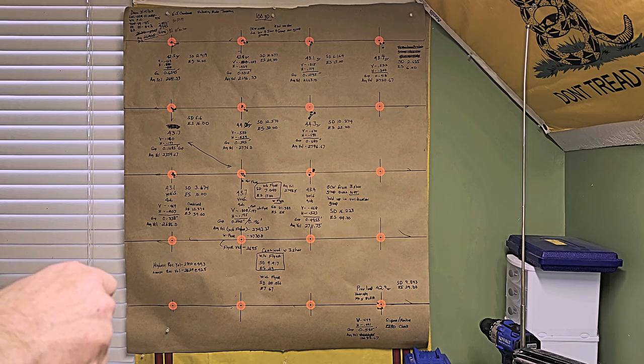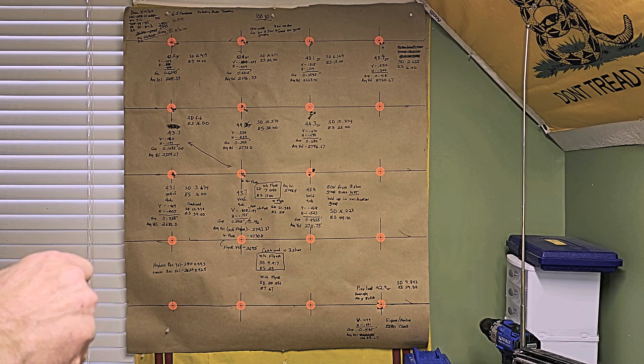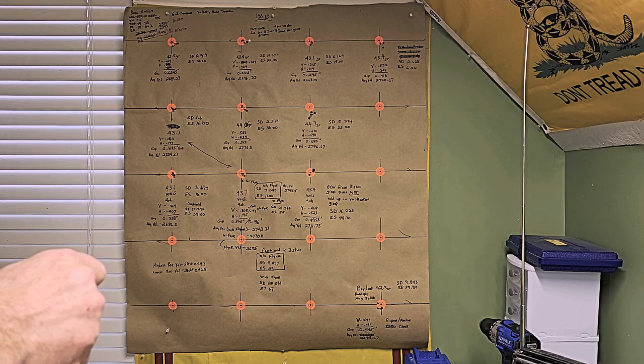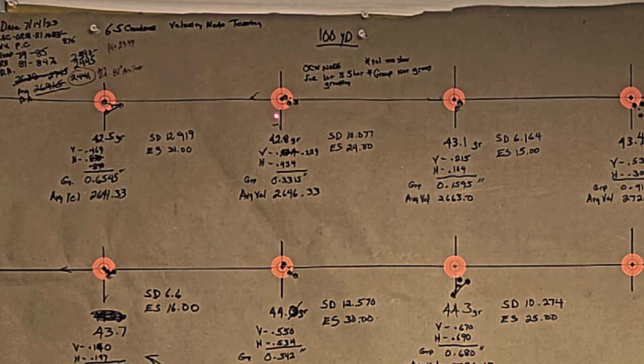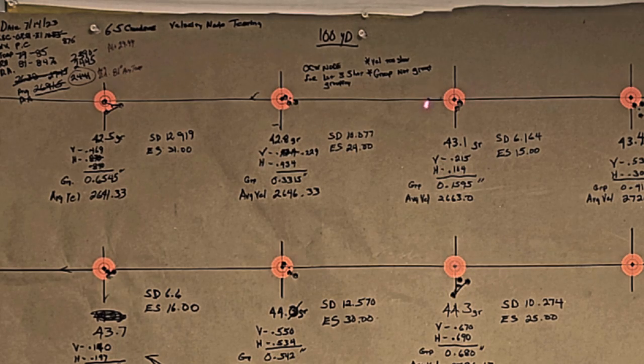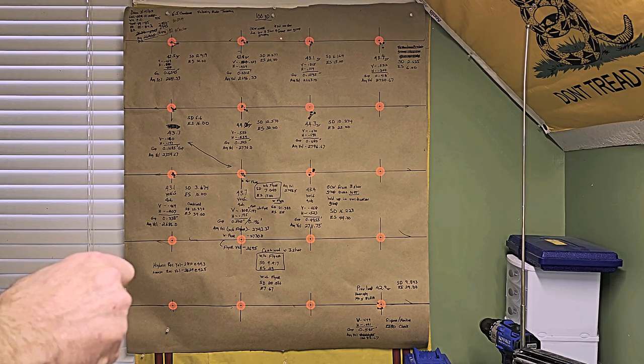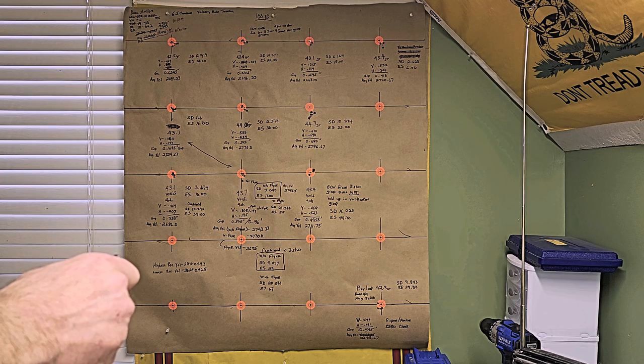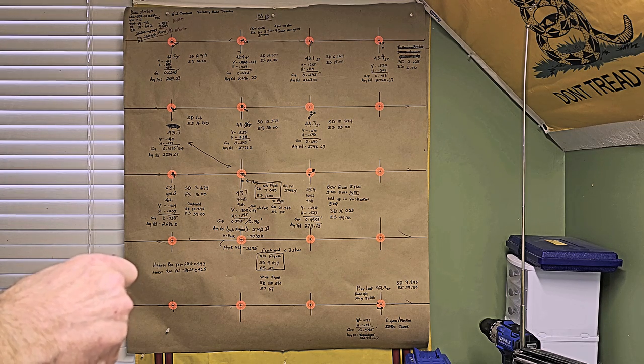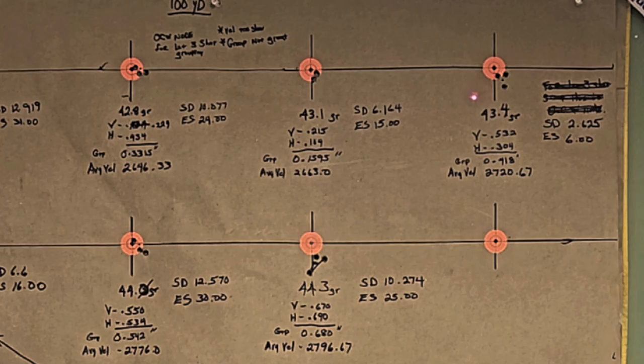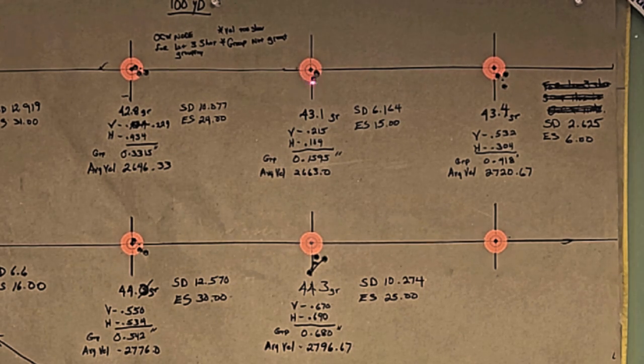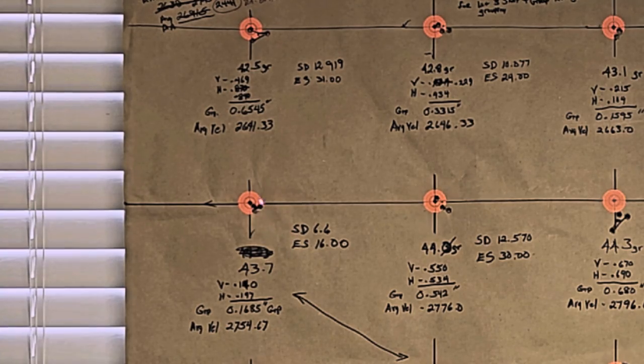Now if we go back to the best load development method, we actually have what would look like an OCW node right here at 42.8. That's a pretty decent group. It's in between two other groups. I'm not really sure why I have this marked as an OCW node. It's not a great group, it's an okay group, but the one right below it was not very good. One right above it, 43.1 was good, and I think I may have had 43.4 also marked as an OCW node because I've got a really good group here at 43.1 and then a really good group here at 43.7.